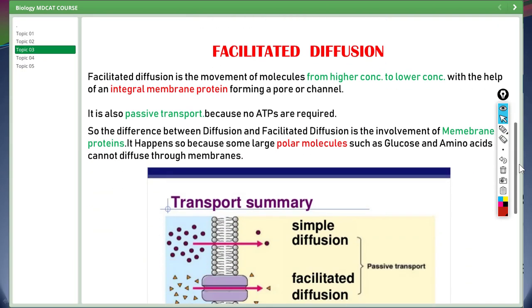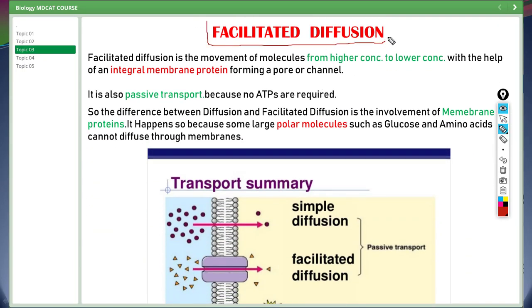Next we have facilitated diffusion. It is the movement of molecules from higher concentration to a lower concentration with the help of an integral membrane protein forming a pore or channel. It is also passive transport because no ATP is required. So the difference between diffusion and facilitated diffusion is the involvement of integral membrane proteins. It happens so because some large polar molecules such as glucose and amino acids cannot diffuse through membrane.